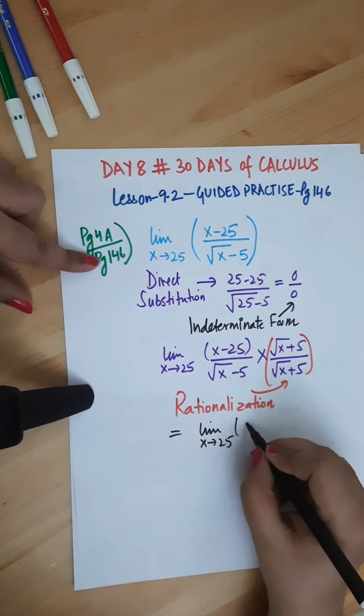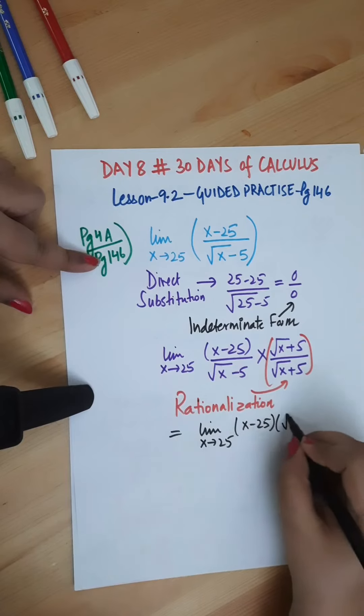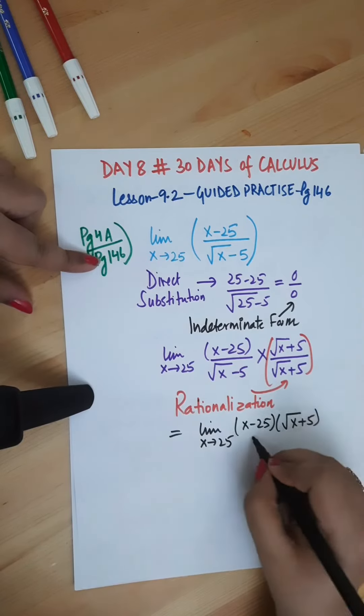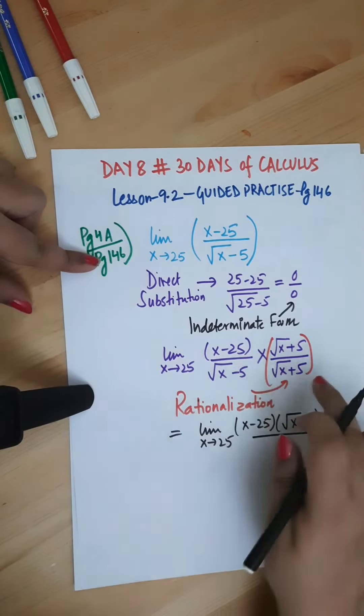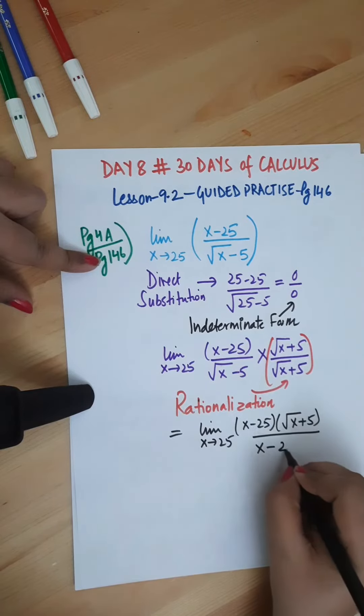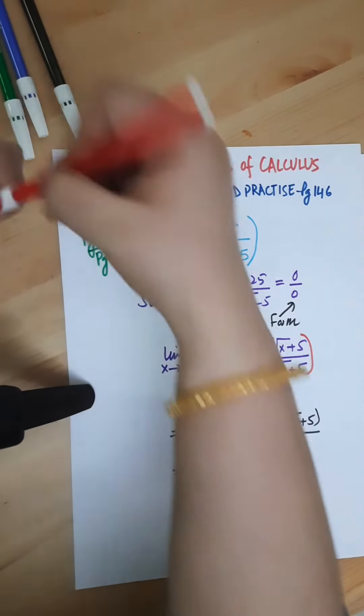Now when we multiply, we do that to the numerator and denominator both so that the formula remains unchanged. Rationalization leads to multiplication in the numerator: x minus 25 multiplied with square root of x plus 5.